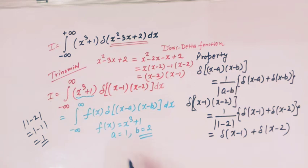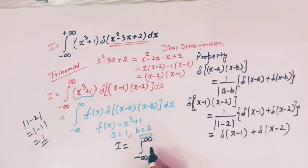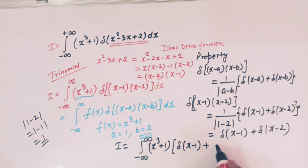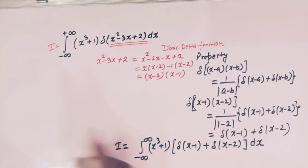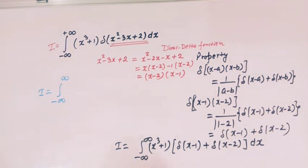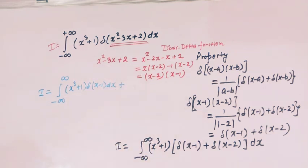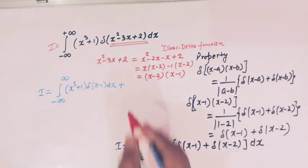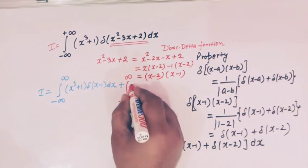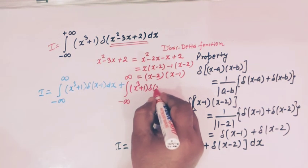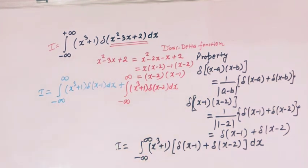So now this integral I can be written as the integral from minus infinity to infinity of x cubed plus 1 times [delta(x minus 1) plus delta(x minus 2)] dx. This can be written as a sum of two integrals: the integral from minus infinity to infinity of (x cubed plus 1) delta(x minus 1) dx, plus the integral from minus infinity to infinity of (x cubed plus 1) delta(x minus 2) dx.